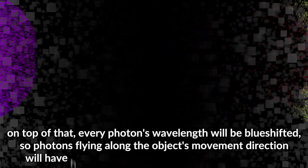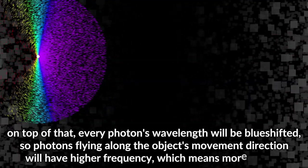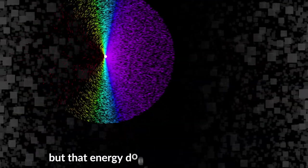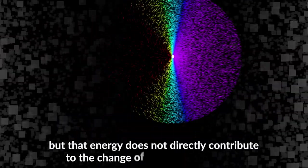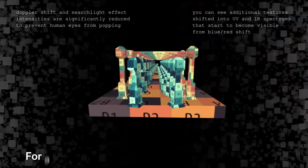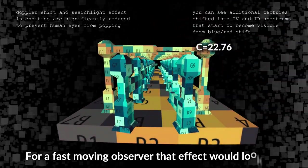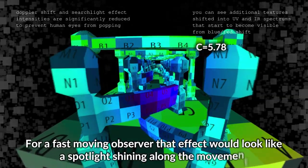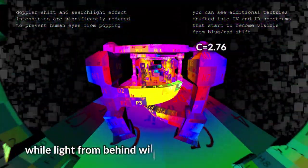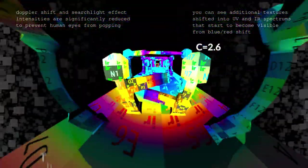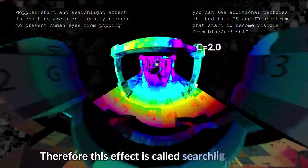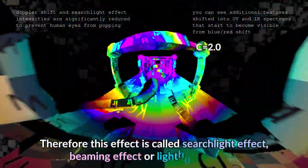On top of that, every photon's wavelength will be blue-shifted, so photons flying along the object's movement direction will have higher frequency, which means more energy. But that energy does not directly contribute to the change of apparent brightness. For a fast-moving observer, that effect would look like a spotlight shining along the movement, while light from behind will be red-shifted and dimmed. Therefore this effect is called searchlight effect, beaming effect, or lighthouse effect.